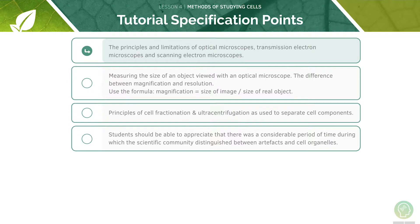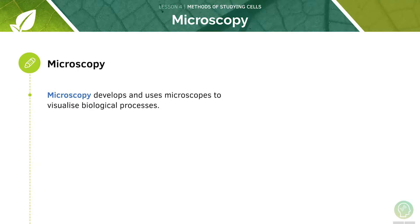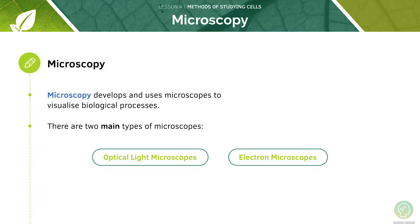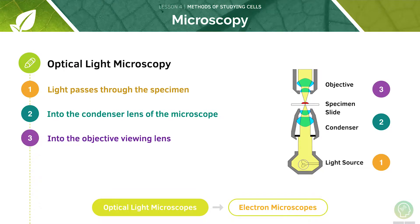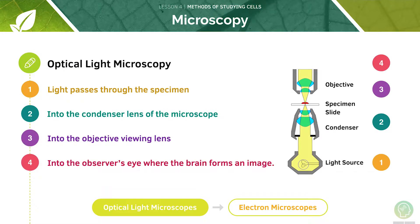First we will look at the different kinds of microscopes. The field of microscopy studies how to develop and use microscopes to visualise biological processes. There are two main types: optical light microscopes and electron microscopes. In optical microscopy, light passes through the specimen, then into the condenser lens, then into the objective viewing lens, and finally into the observer's eye where the brain forms an image. The light can also pass to a camera linked to a computer which can display the image on a screen.